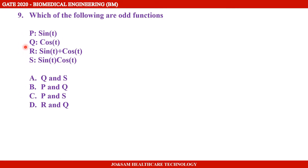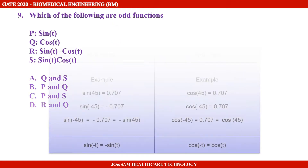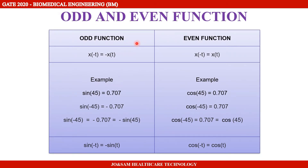Before finding the answer, let us look at the basic concepts of odd and even functions. For a function x(t), if we apply minus t in place of t, we get x(−t). If x(−t) equals minus x(t), then it is an odd function. If x(−t) equals x(t), then it is an even function.